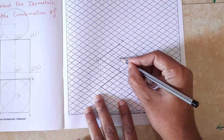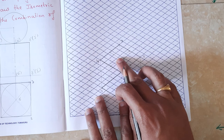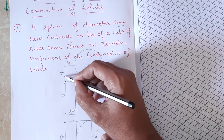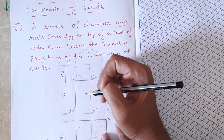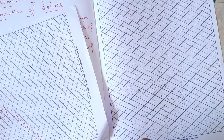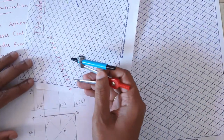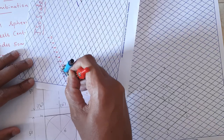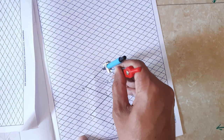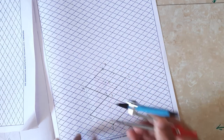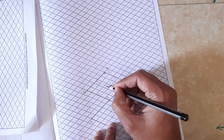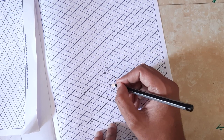From the top face we locate the center. The sphere has a diameter of 50 mm, so the radius is 25 mm. From the center of the top face, we need to measure iso 25 upward to locate the center of the sphere. So this is the center of the sphere, and this distance must be iso 25.